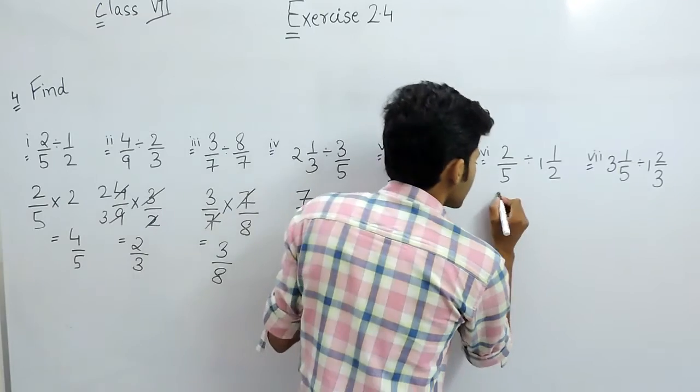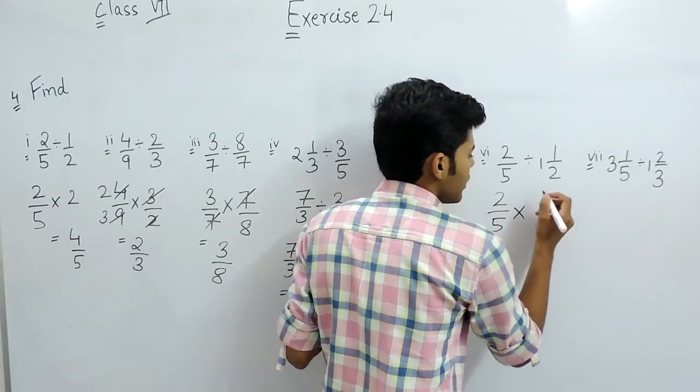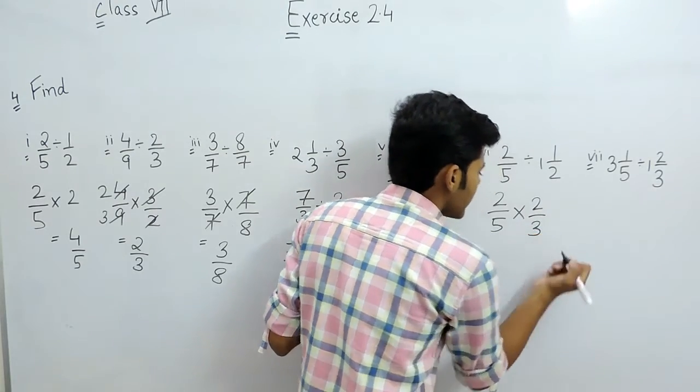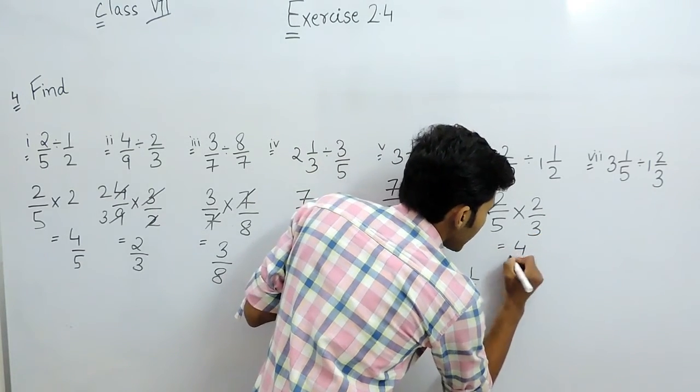Now, here also we will do the same thing, 2 by 5 multiplied with, that will be 3 by 2, I am writing it as 2 by 3, so that will be 4 by 15.